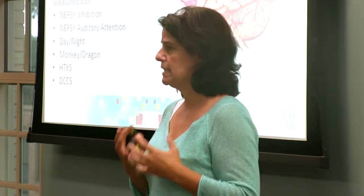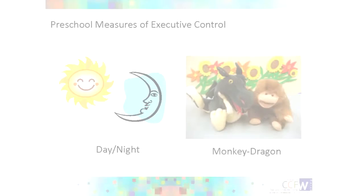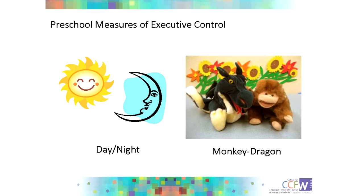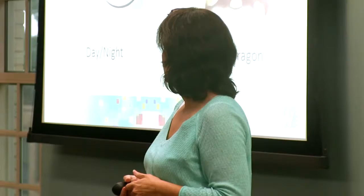We created a battery with parts that were easy for little kids and parts they would grow into. Common measures include day-night, which is a downward extension of a Stroop task: when shown a picture of a sun, the child is told to say 'night,' and when shown a moon, to say 'day' — producing a conflicting or non-dominant response. Monkey-dragon is like a Simon Says task where children do whatever the monkey tells them but not what the unfriendly dragon tells them — inhibiting a response when instructed to act.